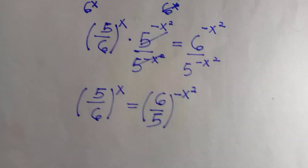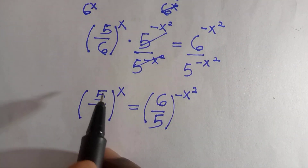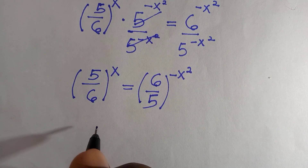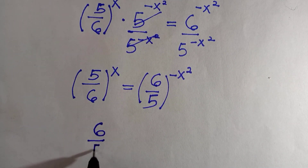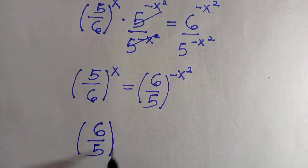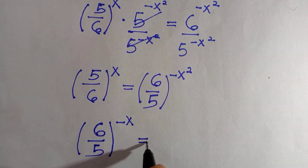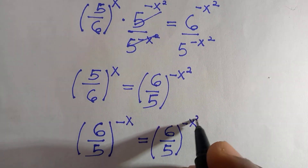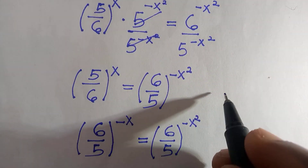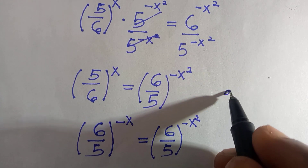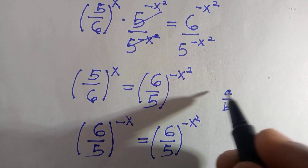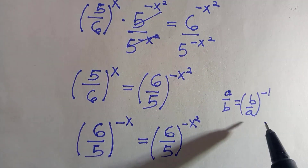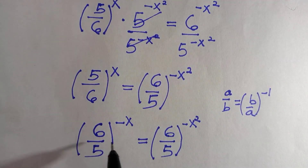At this stage I want to apply some assumption by converting five over six to six over five. After doing that, we apply the negative to the power — this is just like the inverse. So we write six divided by five, all raised to the power of negative x squared. Suppose we have a divided by b; we transform it to b divided by a, but everything is to the power of negative one.